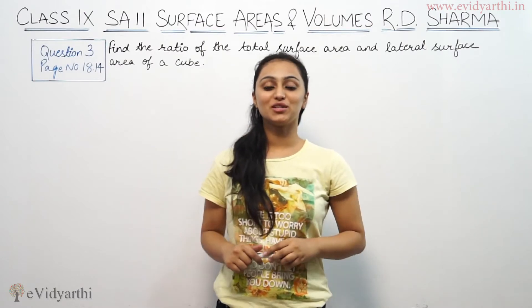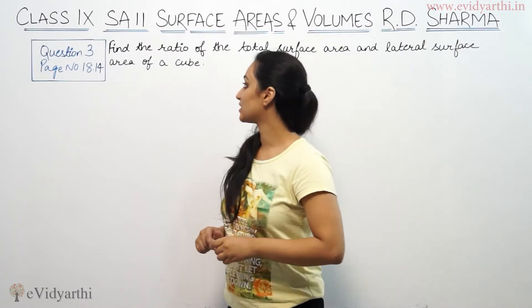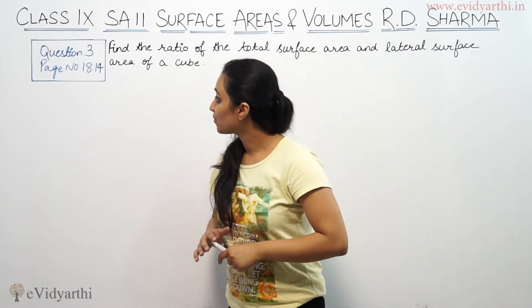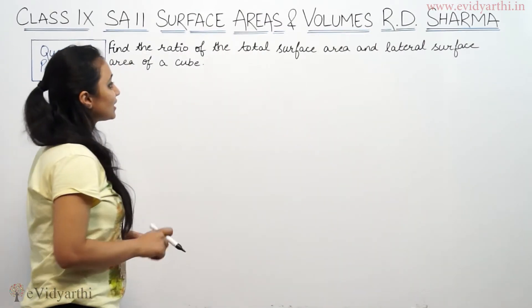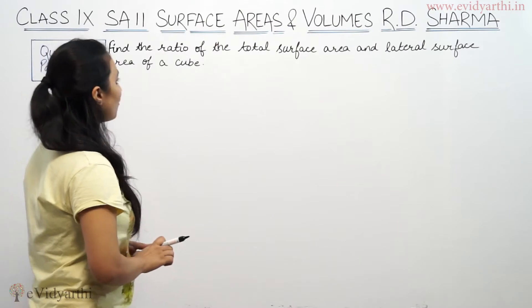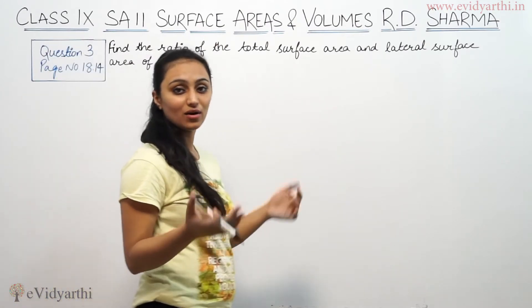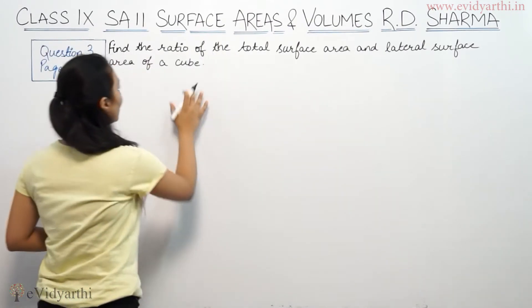Hi, this is Krishku with another question of surface areas and volumes. This is question number 3 from exercise page number 8.14 of our channel. This says find the ratio of total surface area and lateral surface area of a cube.